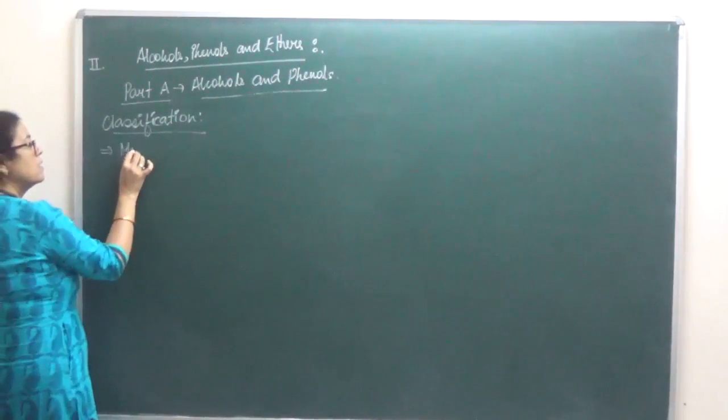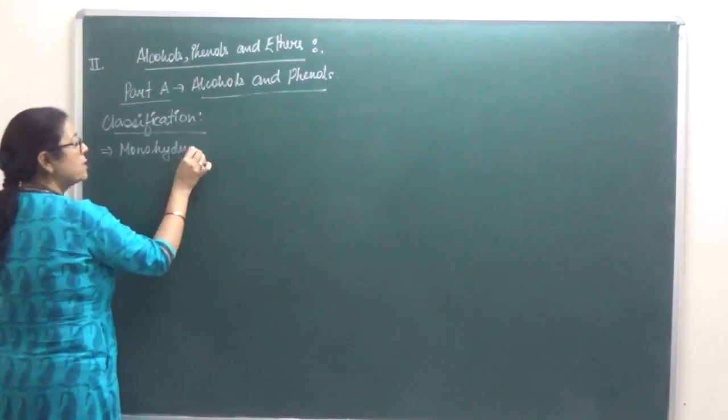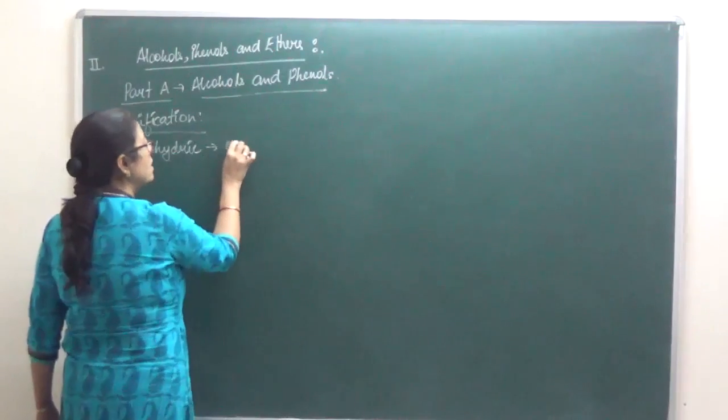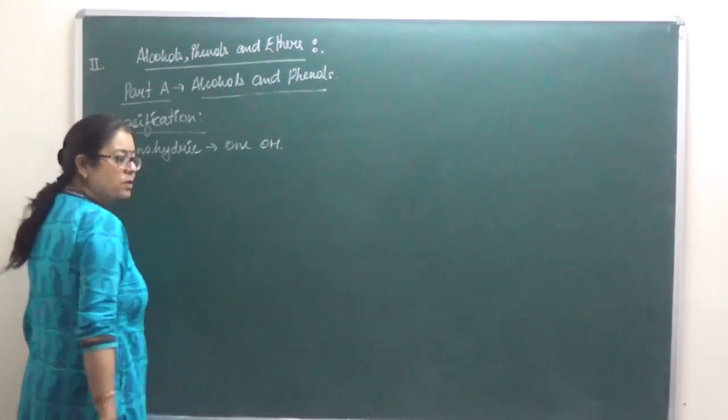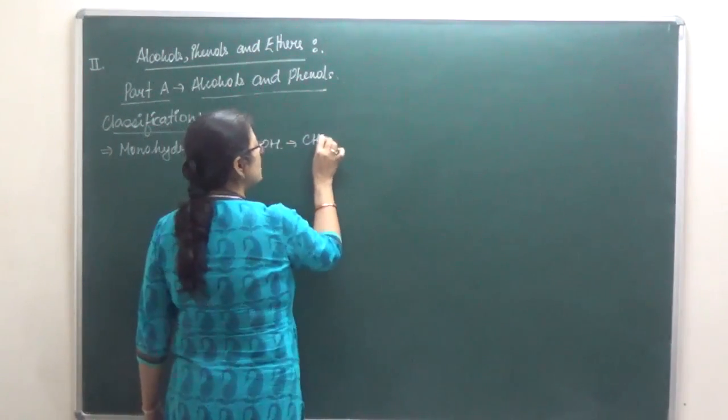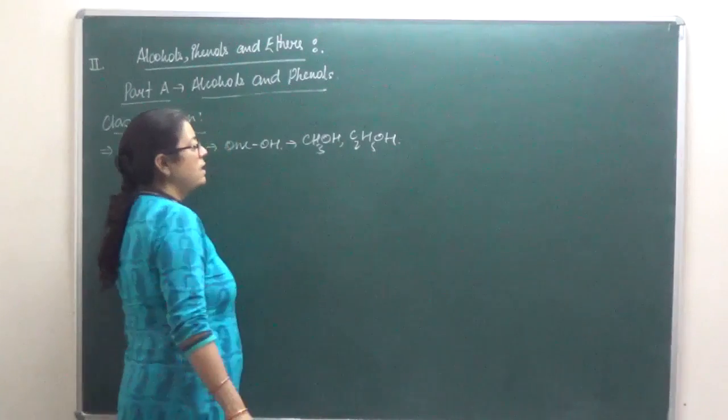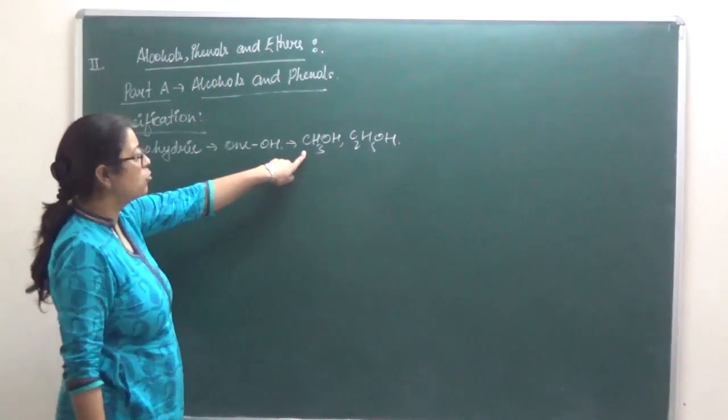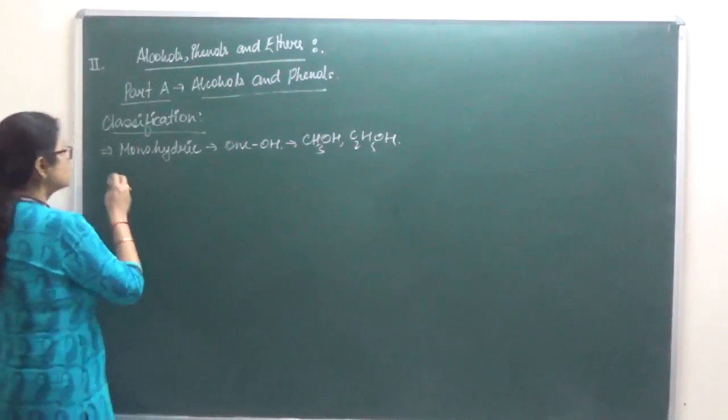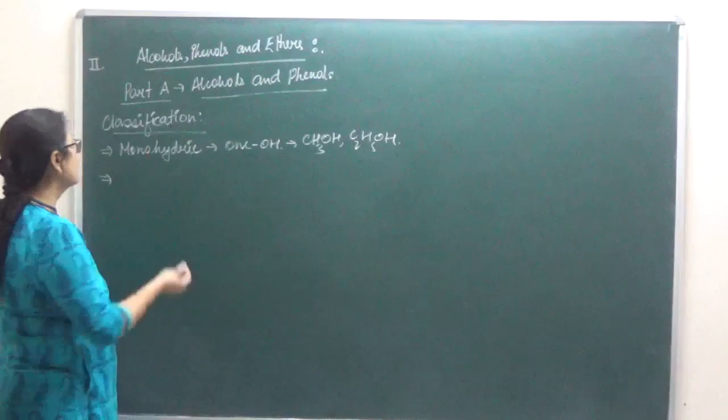They may be monohydric having one OH group. Normal alcohols like CH3OH, C2H5OH, and how do we name them? Methanol, ethanol, propanol and so on. IUPAC names are like ethyl alcohol and so on.